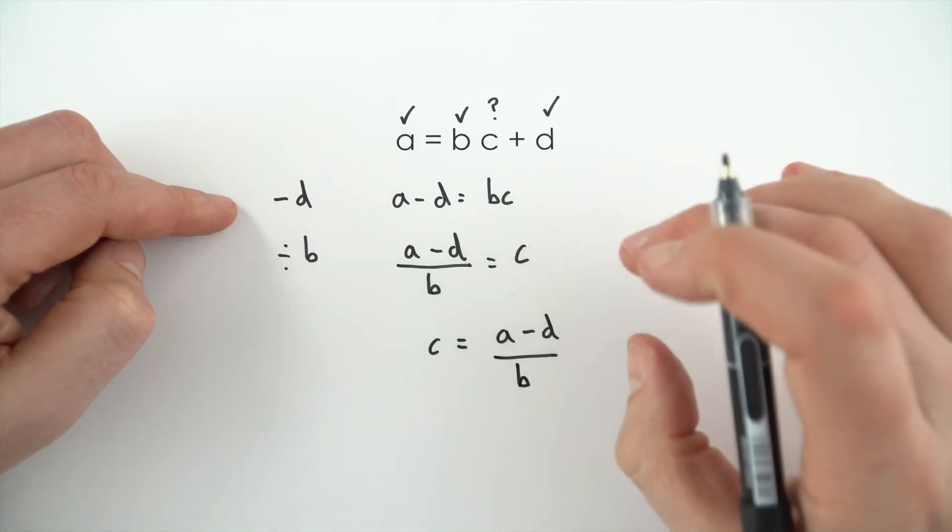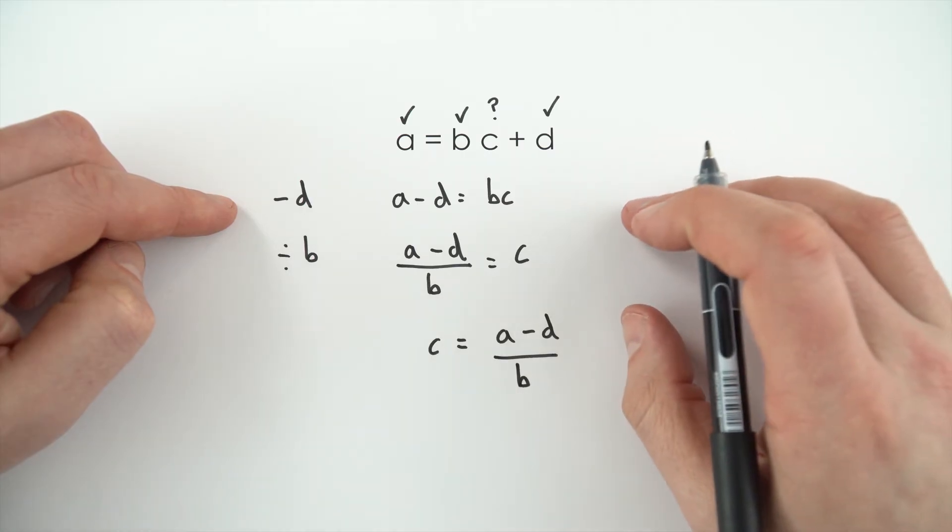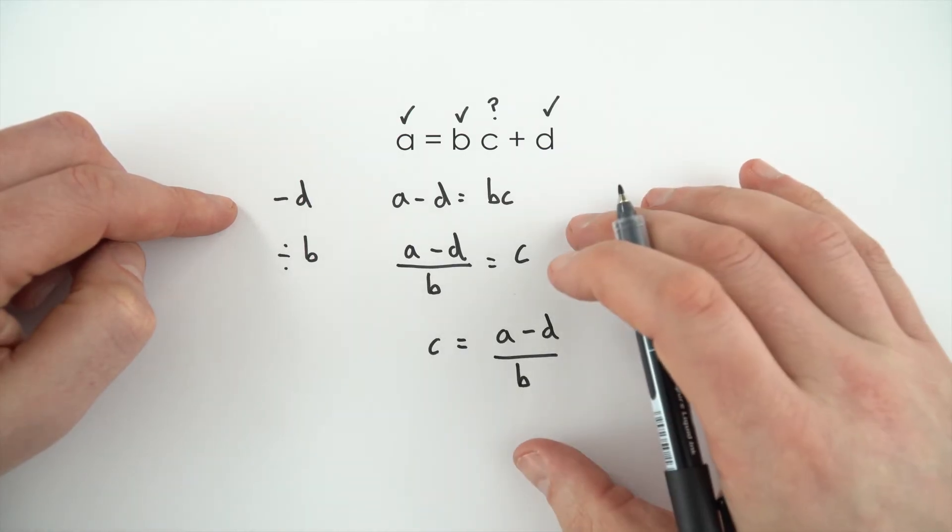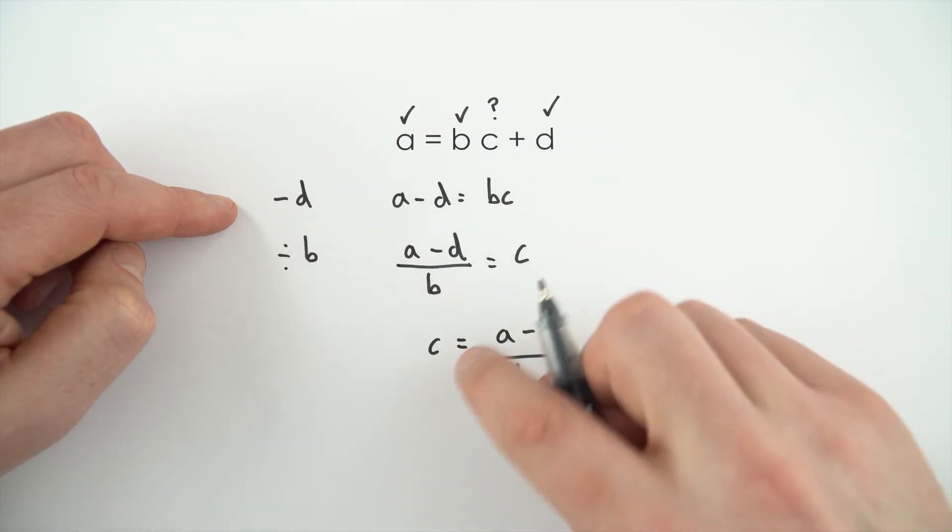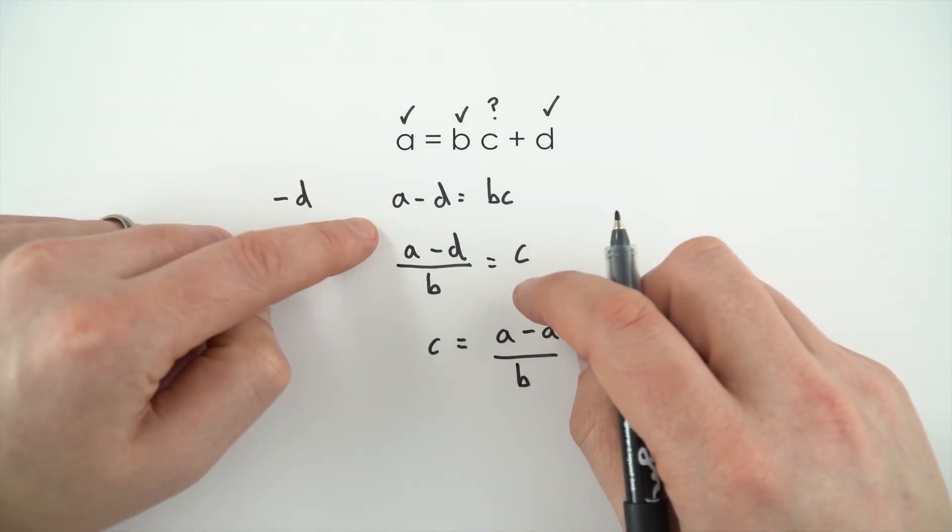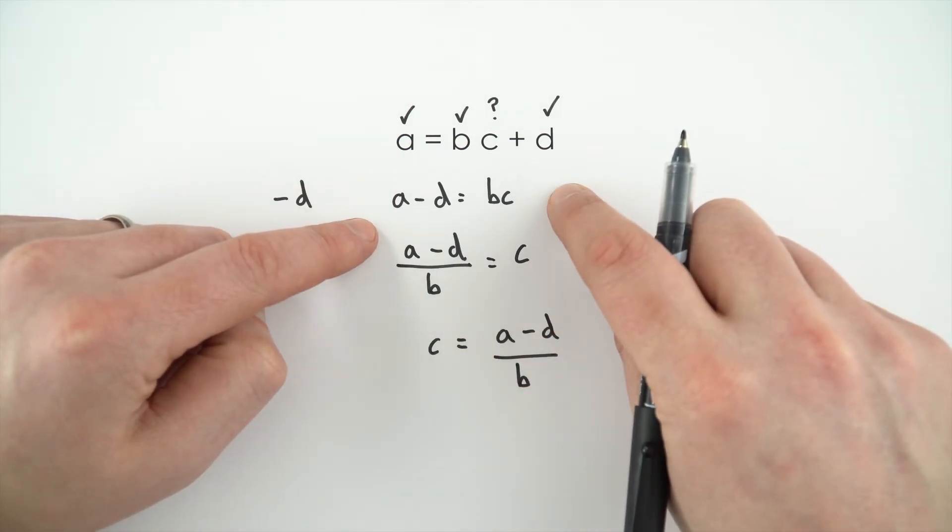So this is a really important skill to get sorted at the start of your GCSEs, and that's all there is to it. It's just lots and lots of practice, making sure that whatever you do to the left side of the equation, you do to the right as well.